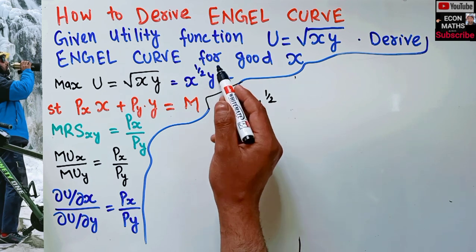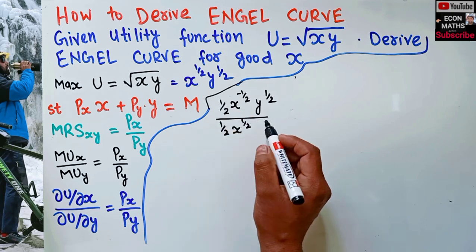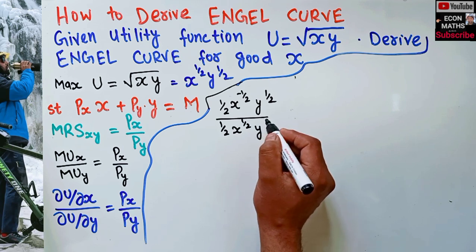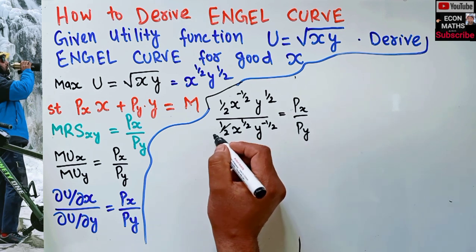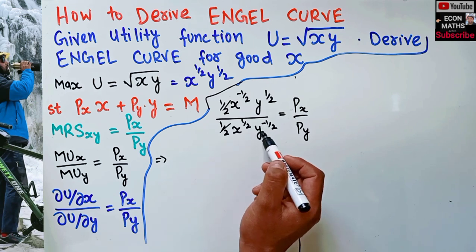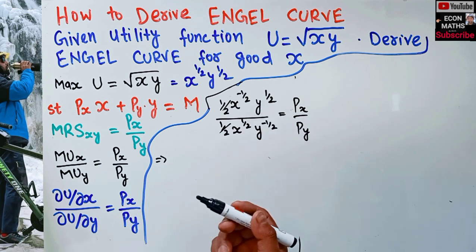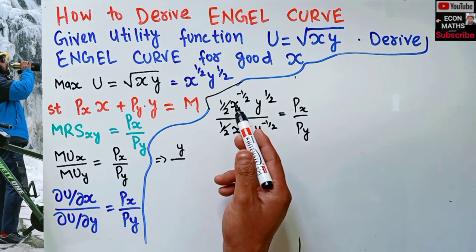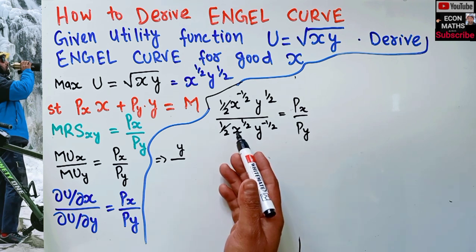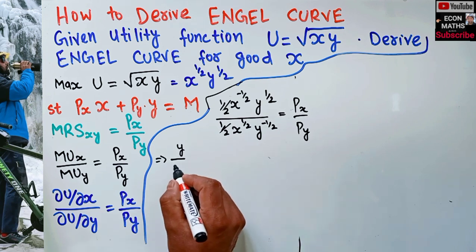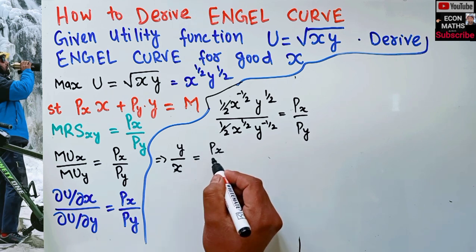For ∂u/∂y: the coefficient (1/2) comes out, x^(1/2) remains the same since we're taking the partial with respect to y, and y becomes y^(−1/2). Setting MRS equal to Px/Py, the (1/2) factors cancel. Transposing y^(−1/2) to the numerator adds exponents to give y, and similarly x^(−1/2) moves up to give x. So we get y/x = Px/Py.